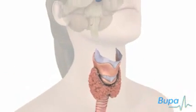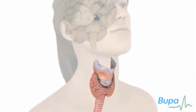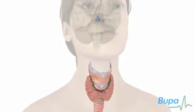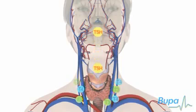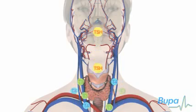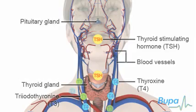The amount of the hormones T3 and T4 that your thyroid gland produces is controlled by the pituitary gland, which is in your brain. Your pituitary gland produces a hormone called thyroid stimulating hormone or TSH, which stimulates your thyroid gland to produce the thyroid hormones.